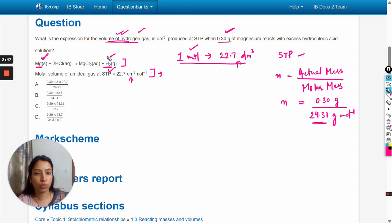As I have already said, this is the number of moles of hydrogen gas. If one mole occupies 22.7 decimeter cubed, then this number of moles will occupy this much volume.